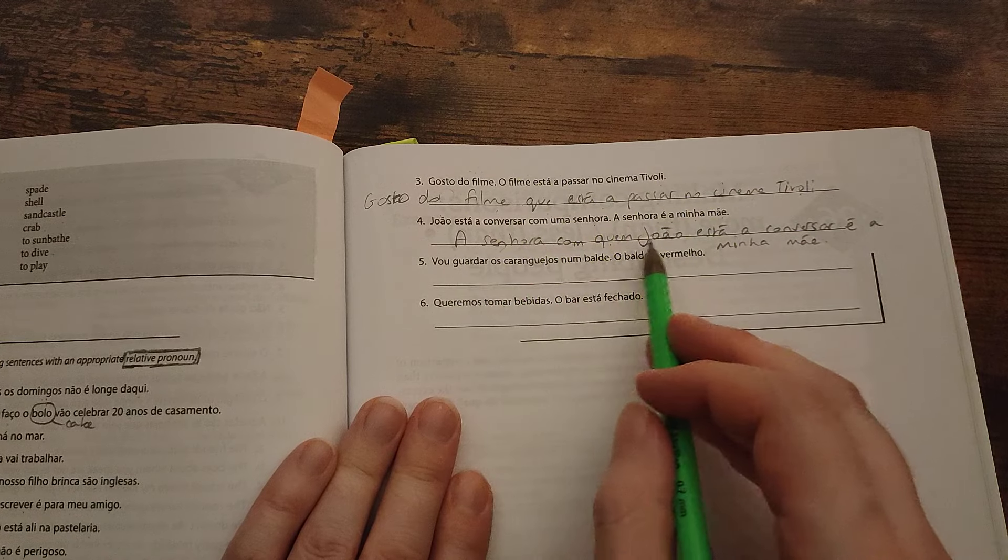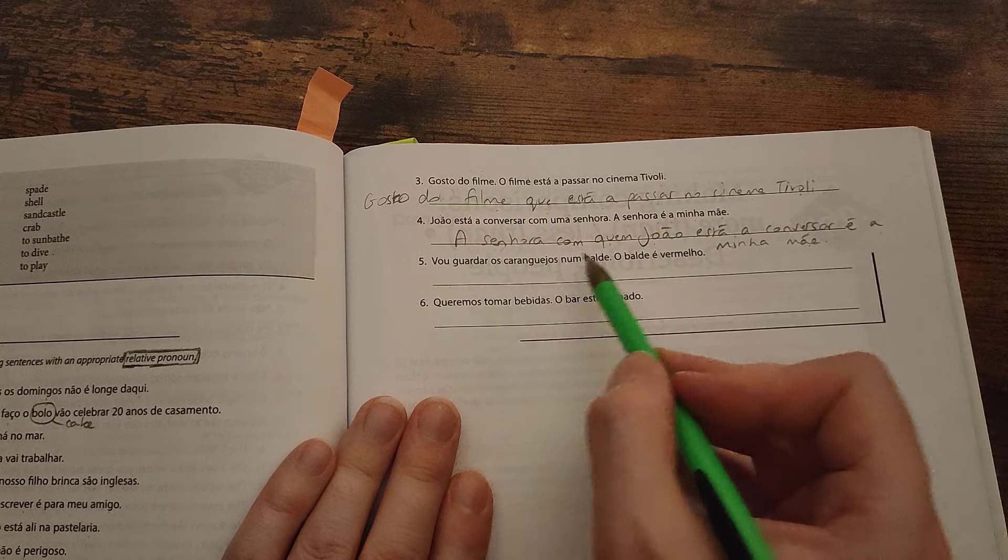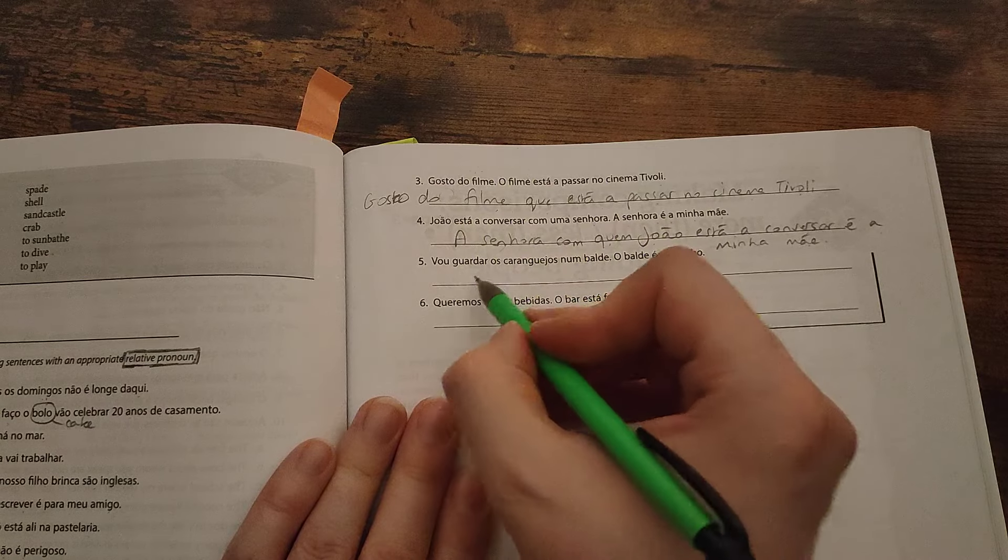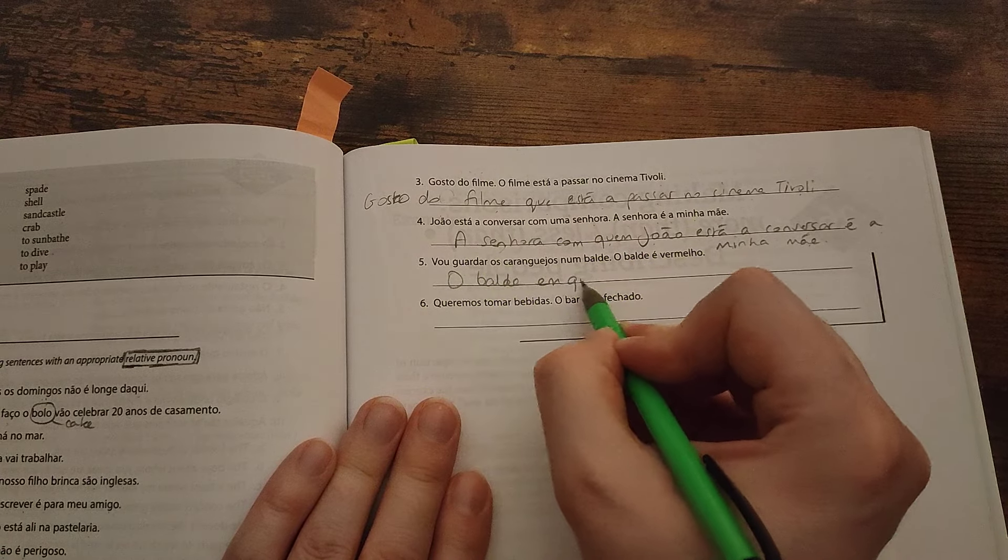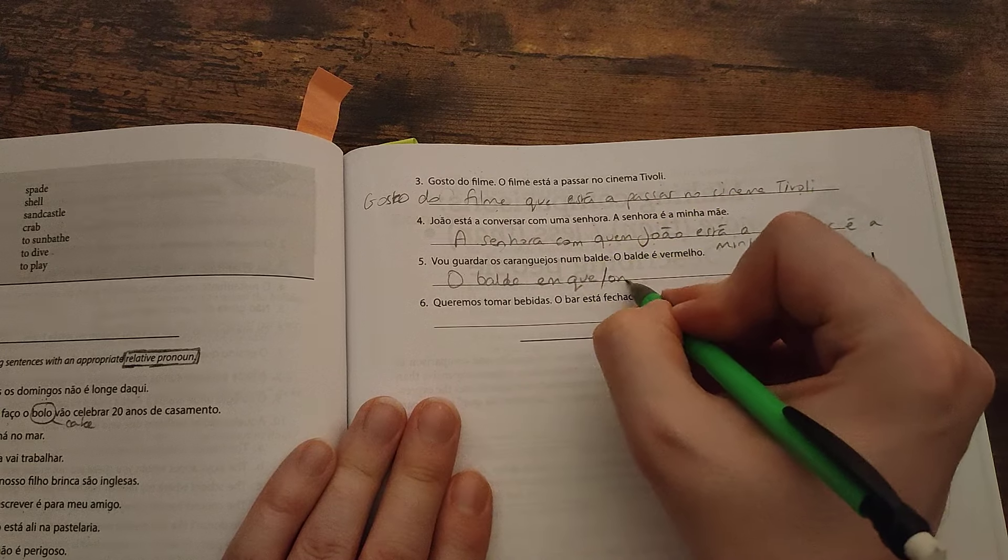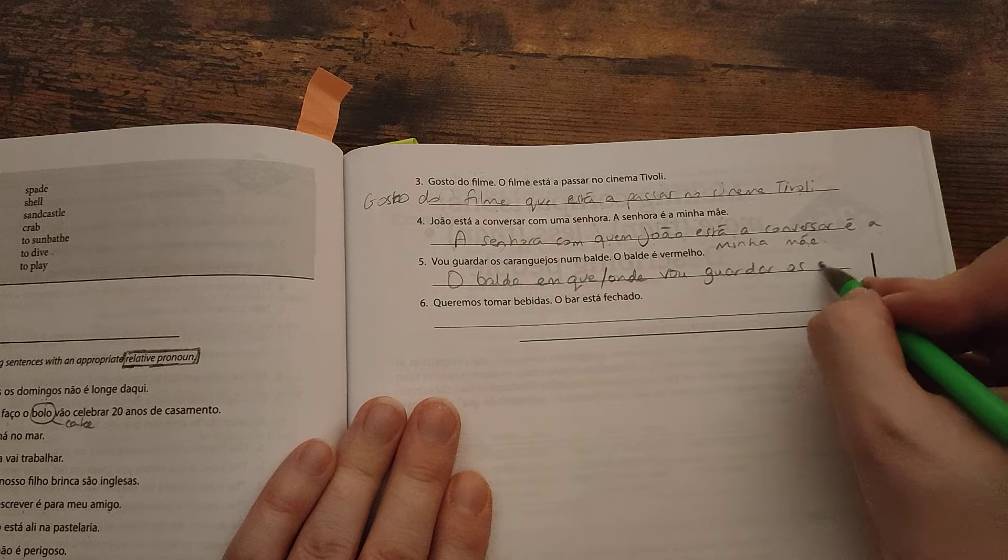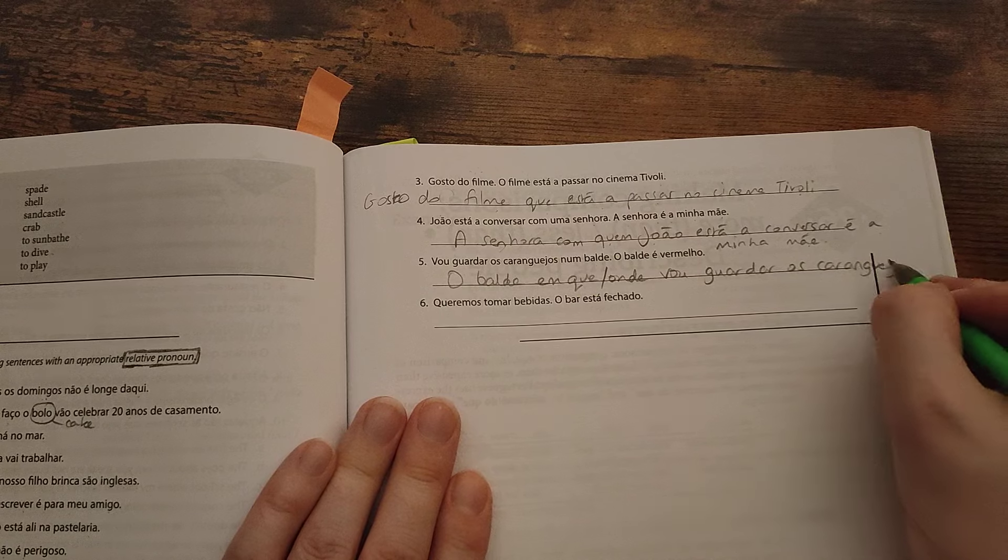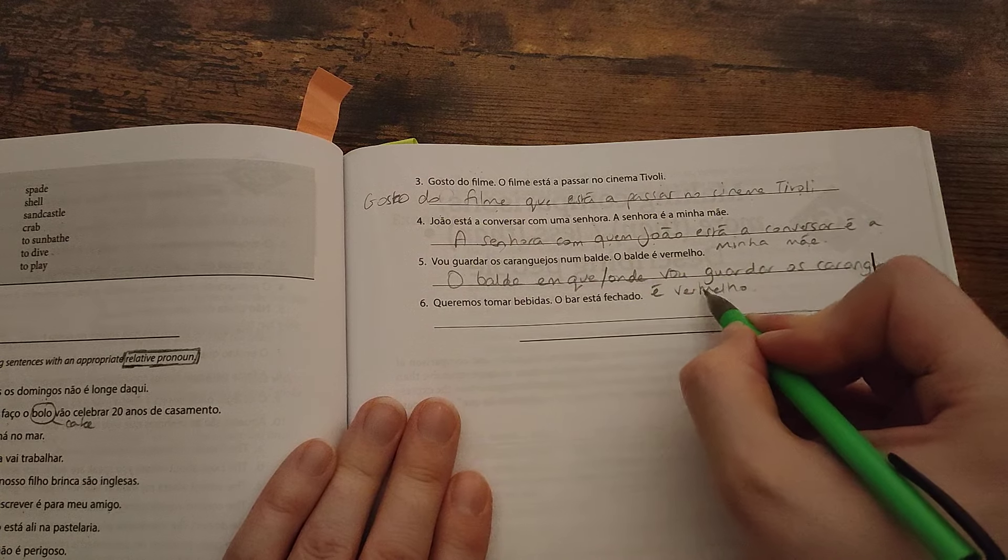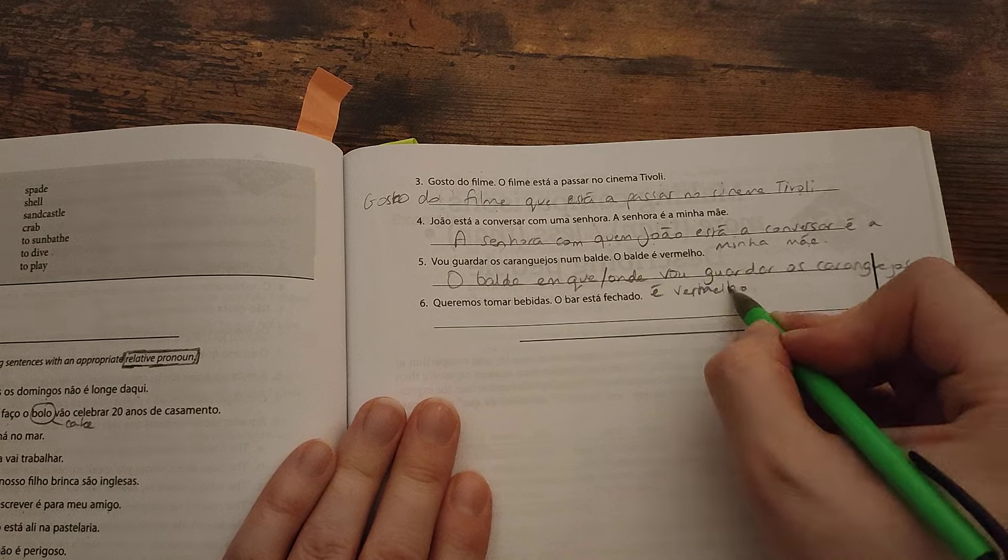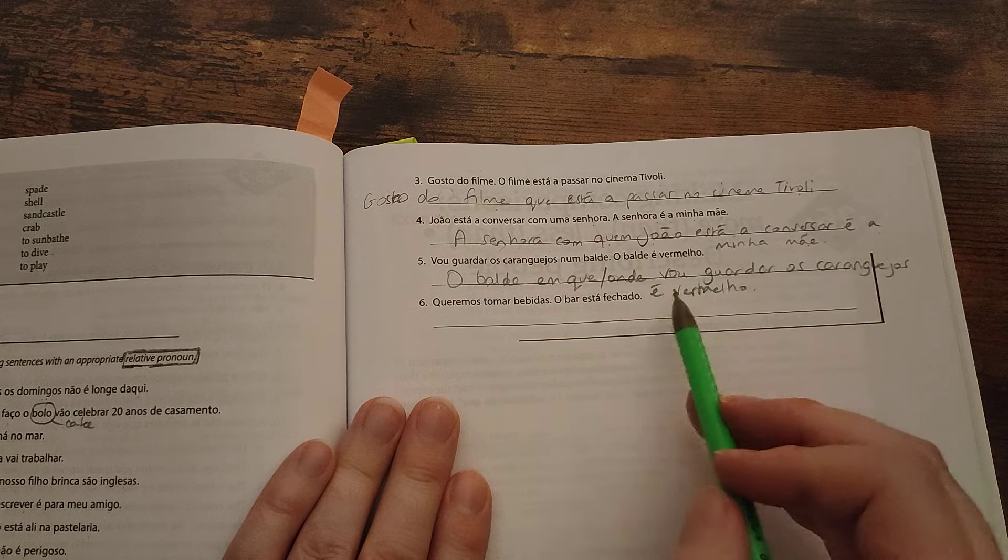Vou guardar os caranguejos num balde. O balde é vermelho. O balde em que, ou onde, vou guardar os caranguejos é vermelho. The bucket in which or where I'm going to keep the crabs is red.